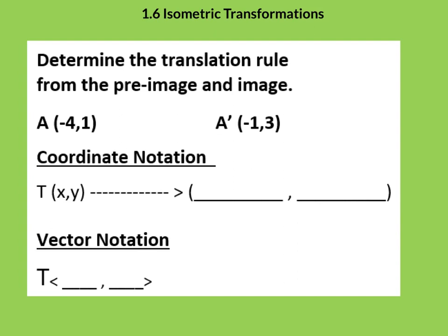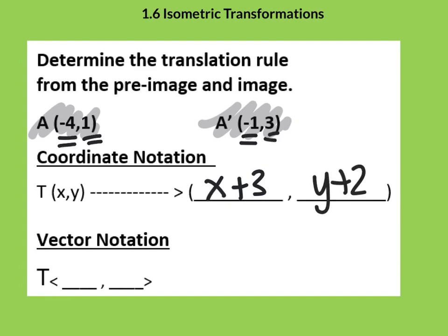This says, here a translation has taken place from here to here, and they would like us to write the coordinate rule in the vector notation. So I noticed that I went from negative 4 to negative 1. That's an addition of 3. And I noticed I went from 1 to 3. That's 2 of these. So that would be its coordinate rule, and the vector is quite easy as well. It just looks like this.